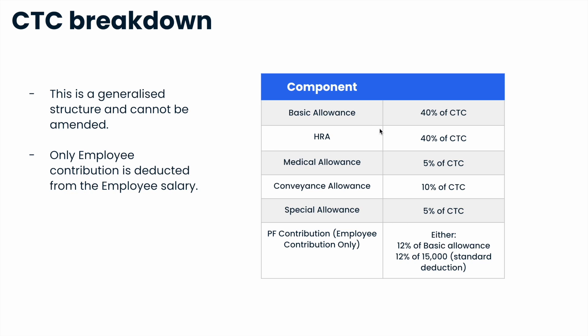As an employee in India, you will automatically be enrolled into PF contributions and only the employee contribution is deducted from the employee salary. The standard deduction is 12% or 15,000. To change from or to either of these schemes, we will need your company's approval before the first salary is paid out.